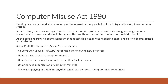The next piece of legislation is the Computer Misuse Act of 1990. Hacking has been around as long as the internet, and actually longer. But prior to 1990, there was very little legislation in place to tackle the problems caused by hacking. Although everybody knew that it was wrong, there was nothing that anybody could do about it. As the problem grew, it became apparent that specific legislation was needed to enable hackers to be prosecuted under the law. So in 1990 the Computer Misuse Act was passed.